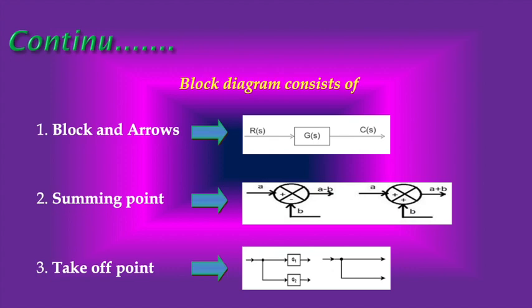Arrows: Block Diagram contains arrows which indicate the unidirectional flow of signals in the diagram. Summing Point: When we want to apply a different input signal to the same block, then the resultant input signal is the summation of all the inputs. The summation of an input signal is represented by a crossed circle called a summing point. For example, these two inputs are a and b, where the sign is minus, so we get the result a minus b. Similarly, a plus b gives that signal.